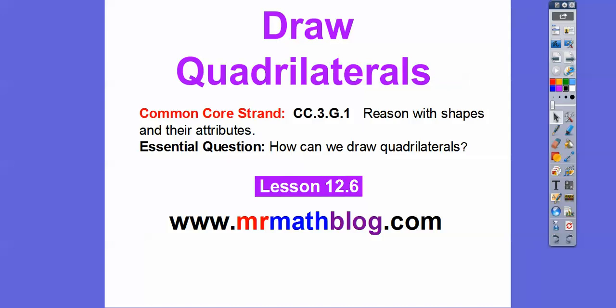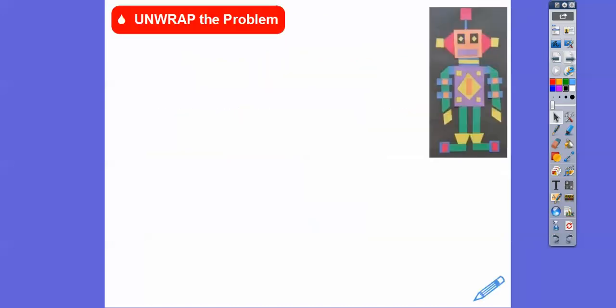So how can we draw different quadrilaterals? Here's a robot made up of all quadrilaterals — even the eyes, the mouth, the antennas, the ears, the hands — they're all four-sided figures. That's pretty cool.